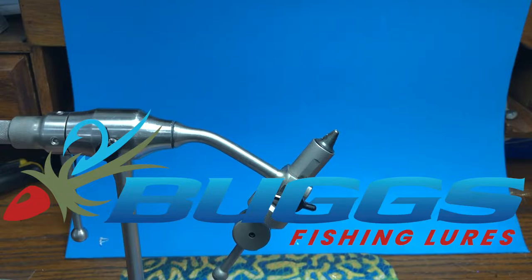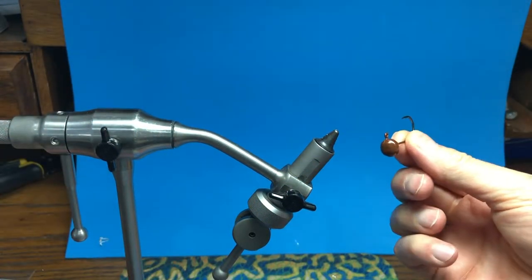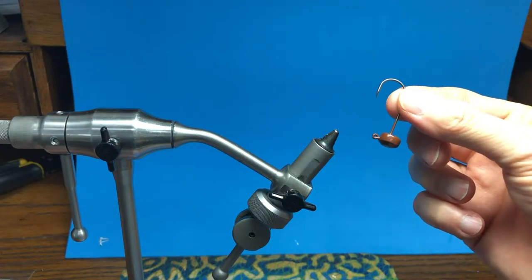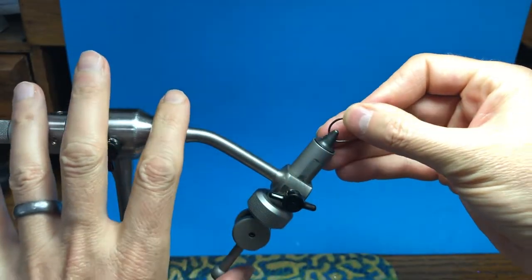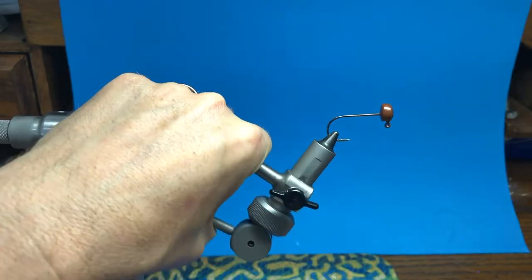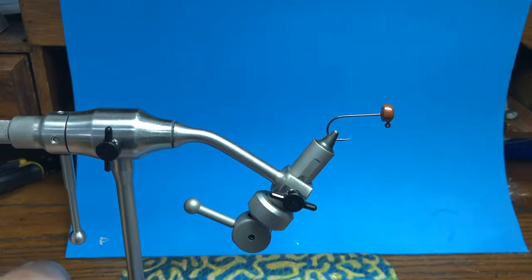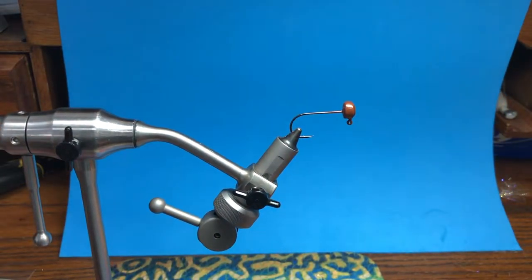Howdy from Texas, this is Heath Hibble with Bugs Fishing and we're gonna tie a Ned Bug on the Bugs Ned Jig Heads. This is a sixth of an ounce. We're gonna tie CA's Fiddler Crab color on a brown jig head and we're ready to roll.